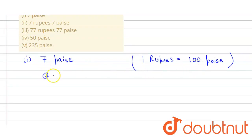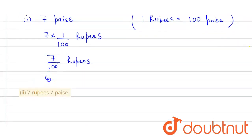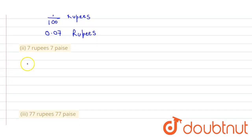Since 1 paise equals 1 divided by 100 rupees, we take 7 multiplied by 1/100 rupees, which gives us 7 divided by 100 rupees. When we divide, we get 0.07 rupees.